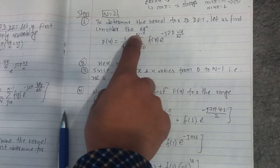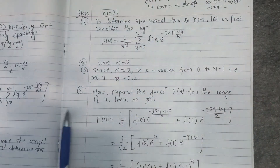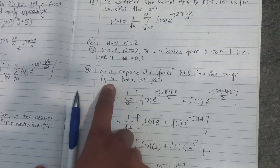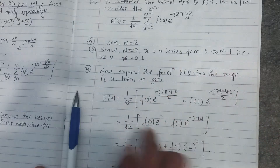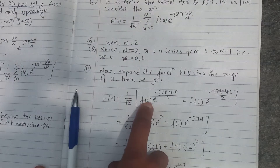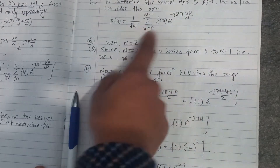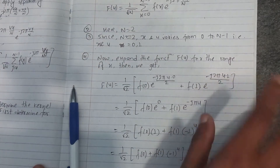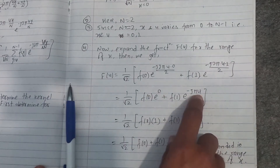Since x goes from 0 to 1, we expand the function. The range of x will be 0 to 1. Expanding: 1 by root 2 equals — so 0 to the power minus j2π·u·0 divided by 2, plus 1 to the power minus j2π·u·1 divided by 2. For u=1, 1 by root 2 equals 0.